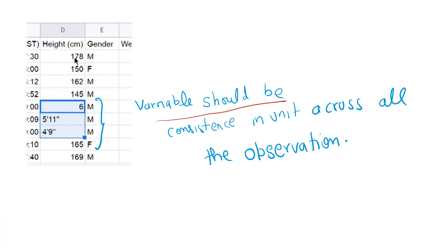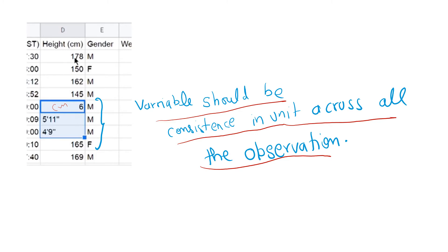Variables should be consistent in unit across all observations. If height is measured in centimeters, then it should be in centimeters for all observations — not a mix of centimeters, feet, and inches. All variables should use the same unit.